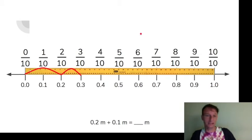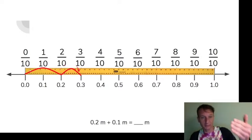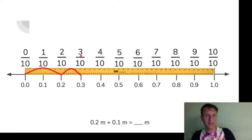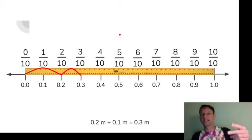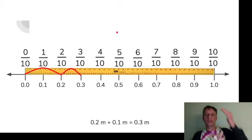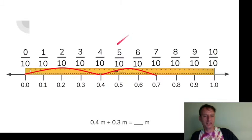Two tenths meter plus one tenth meter equals — where did we end up on our number line? Three tenths meter! Easy. Guess what you just did: you learned how to read decimals, find decimal-fraction equivalents, and even how to add decimals. You are a superstar! Four tenths meter plus three tenths meter is seven tenths meter.